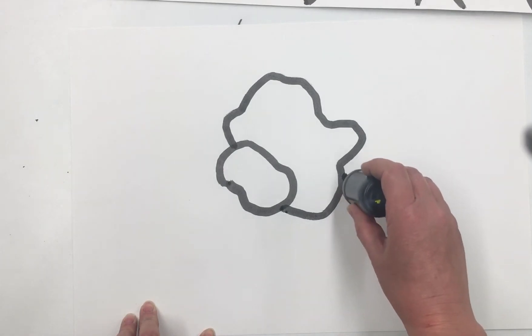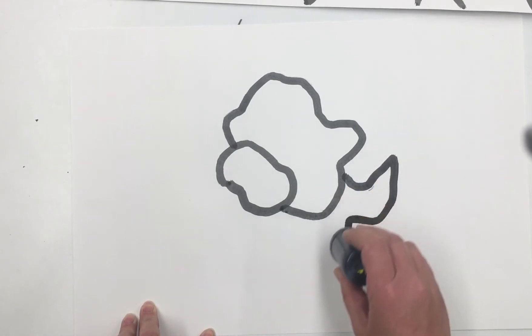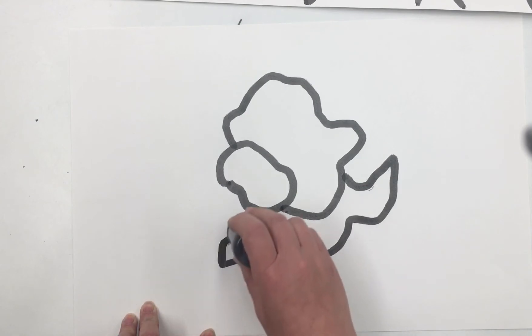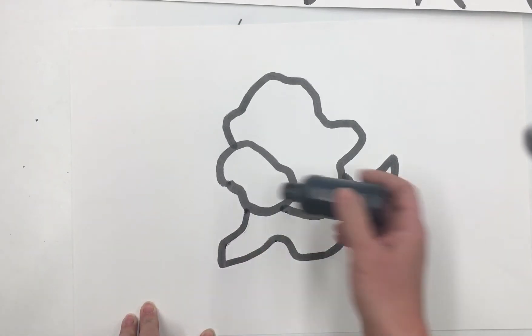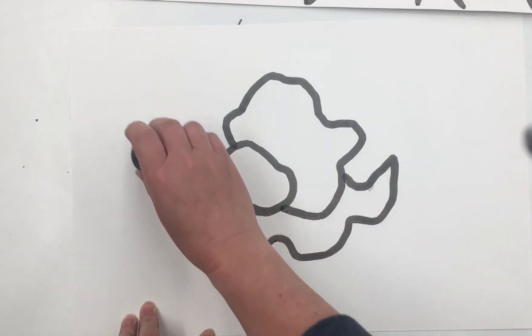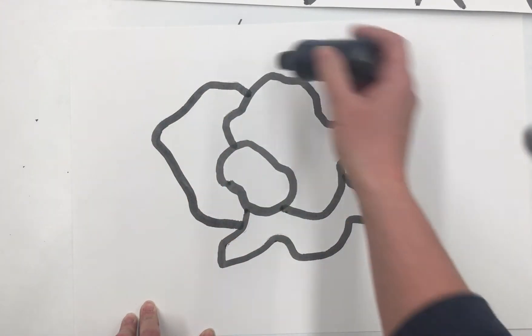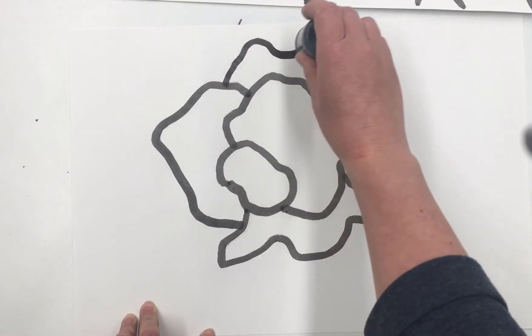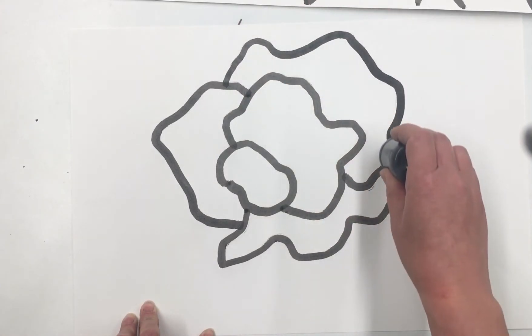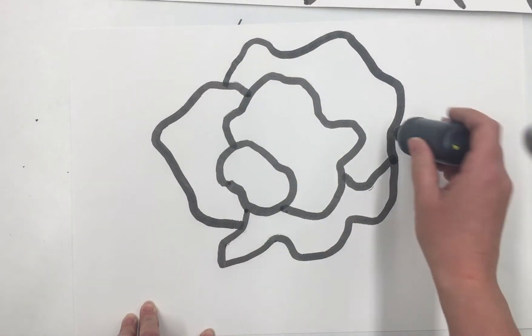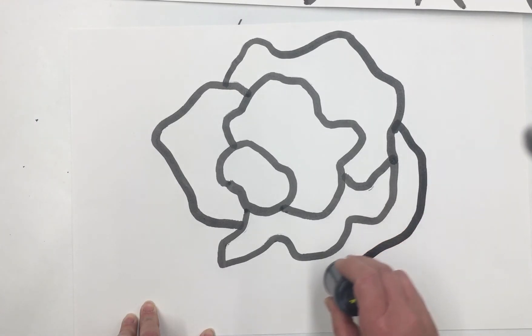I can build off of that line too. Some of them have points, some are longer, some are shorter. I'm going to keep wrapping these lines around in a circular motion and keep building out my layers until I like the shape of my flower.